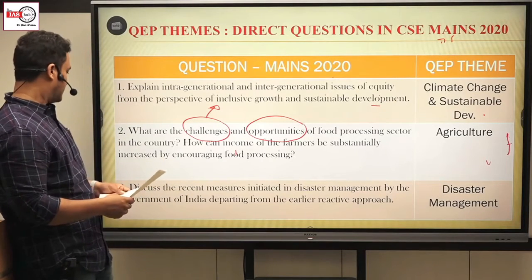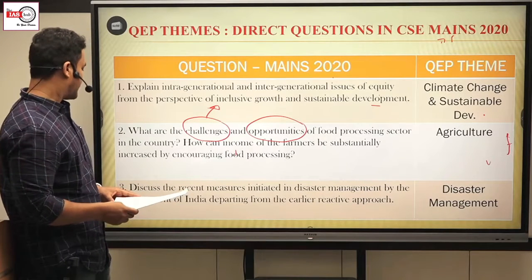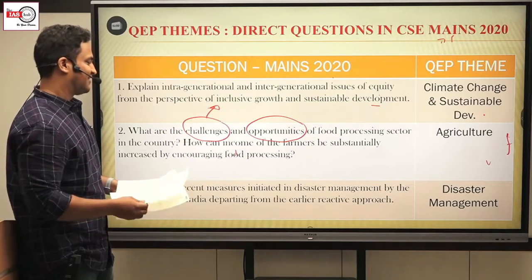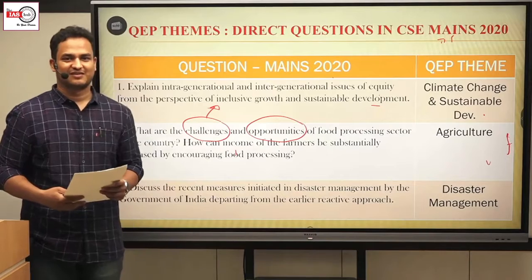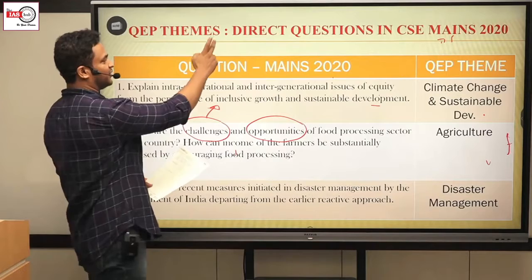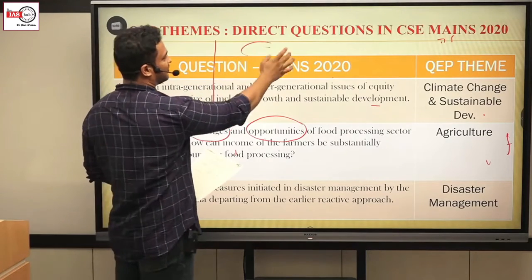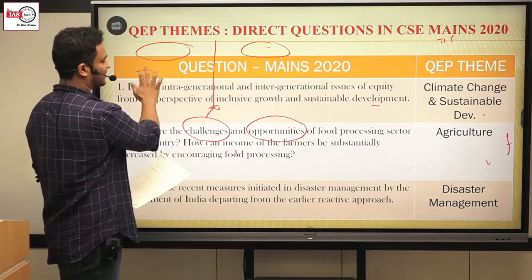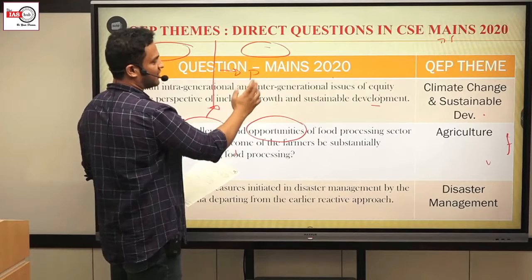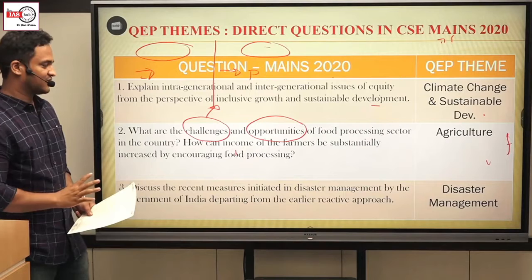The next question was: 'Discuss the recent measures initiated in disaster management by the Government of India departing from the earlier reactive approach.' This was directly from the notes where Sir had shown in two columns what the earlier approach of the government was and what the present approach is. Earlier it was mostly reactive; presently it is proactive. Sir discussed this in a manner and this was the exact question from the notes.